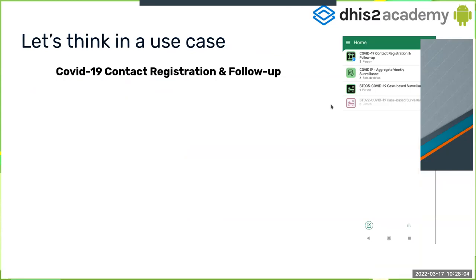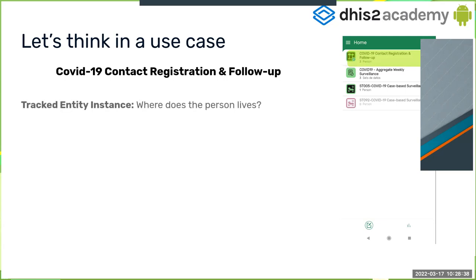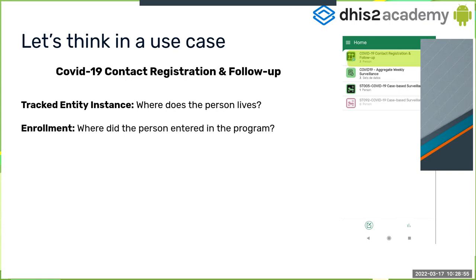To explain all the possibilities, we're using a COVID-19 contact registration and follow-up use case — a pretty current example. You can see it on your home screen in the Android application. For the track entity instance, the coordinate represents where the person lives. For the enrollment, it represents where the person entered the program — for example, the facility or hospital where the person was detected with COVID-19.